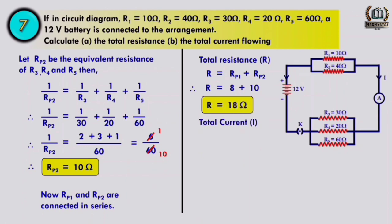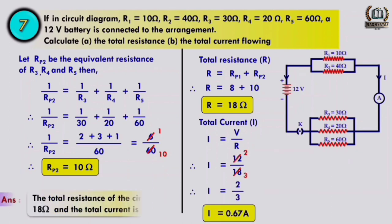R = 8 + 10 = 18 ohm. For total current: I = V/R = 12/18 = 0.67 ampere. The total resistance of the circuit is 18 ohm and the total current is 0.67 ampere.